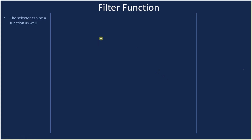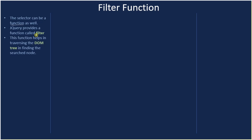The selector passed to the jQuery dollar function can be a string, but it can also be a function. jQuery provides a function called filter, using which you can perform DOM traversal and filtering. The filter function can take either a selector string or a function as an argument — there are two ways it can work based on the parameter you pass.